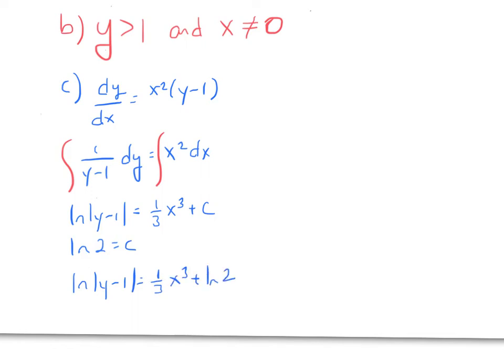Then what we're going to do is exponentiate. So we've got y - 1 equals... We can kind of divide up that right side to make this e^((1/3)x³) times e^(ln 2). And e^(ln 2) is equal to 2. So we've got 2e^((1/3)x³).